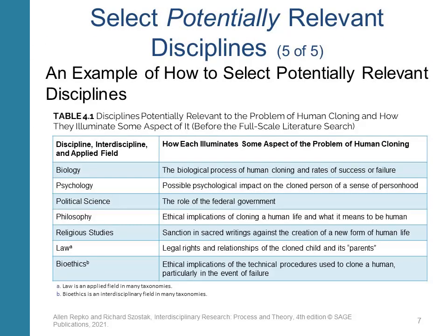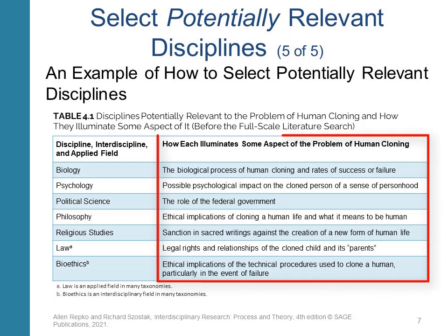Table 4.1 from the textbook is an example of what we are trying to accomplish in this first sub-step. In the left column, we can see a list of disciplines thought to be related to the issue of human cloning: biology, psychology, political science, philosophy, religious studies, law, and bioethics. Then in the right column, we can see a brief explanation of how each discipline is related to the problem — how each discipline attempts to explain the problem.